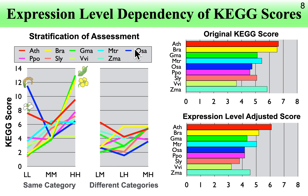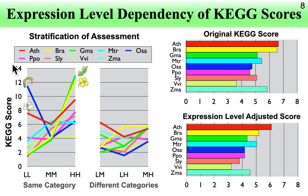To understand the expression-level dependency of the KEGG score, we performed stratified assessment. We first defined three categories of genes: low-expressed, medium-expressed, and high-expressed. Since gene co-expression involves gene pairs, there are six pair categories: low-low, medium-medium, high-high, low-medium, low-high, and medium-high. For every species, we can say that same-category pairs have relatively larger KEGG scores than different-category pairs.